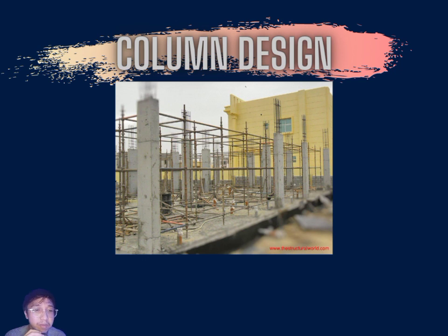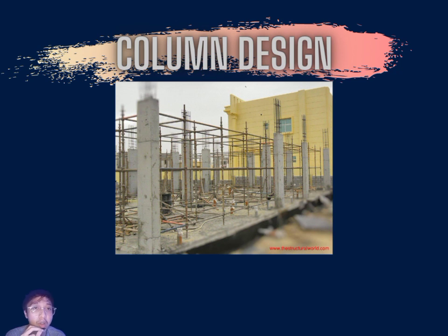These are the steps in the design of reinforced concrete columns. First, determine the design life. Second, assess actions on the column. Third, determine which combination of actions apply. Fourth, assess durability requirements and determine concrete strength. Fifth, check cover requirements for the appropriate fire resistance period. Sixth, calculate minimum cover for durability, fire, and bond requirements. Seventh, analyze the structure to obtain critical moments and axial forces. Eighth, check slenderness. Finally, determine the area of reinforcement required and check spacing of bars.